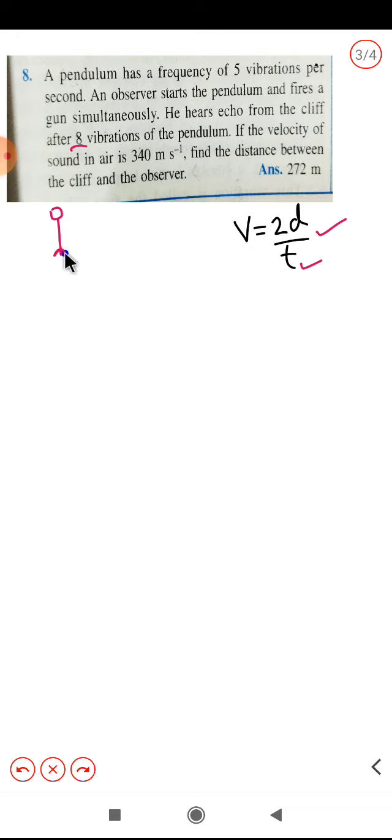In case of echo we know that there is an observer, and generally they give the example of a cliff. So formula is V equals 2d divided by t, because the sound is covering total distance of 2d as you can see. Original distance and this is reflected sound. Total distance is 2d. We need to calculate the distance, velocity is given, and we will find out the time with the help of these data and then put that value in this formula.